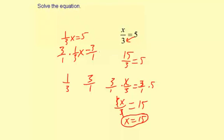3 over 1 times 5. And so right here, you have 3 times 1 divided by 1 times 3. It's going to be 3 over 3, which reduces to 1. So basically, you have x equals 3 times 5, which is 15.